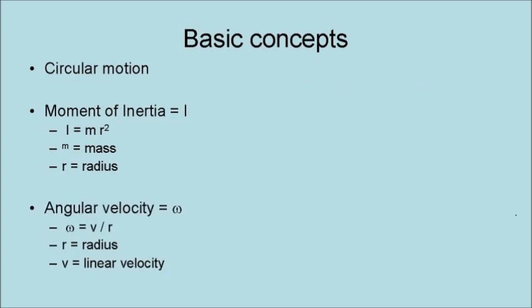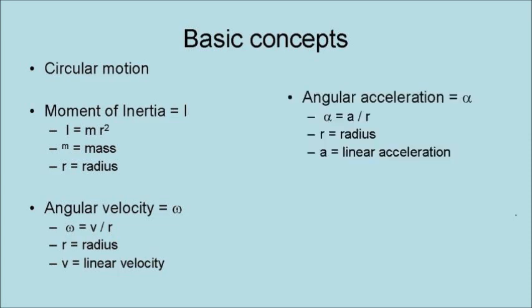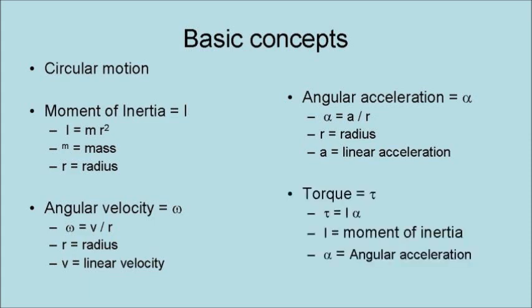There is also angular velocity, which is the linear velocity divided by the radius of the circular motion. Angular acceleration is linear acceleration divided by the radius of the circular motion. Finally, we have torque, which is the circular motion equivalency of force, and it equals the moment of inertia times the angular acceleration.